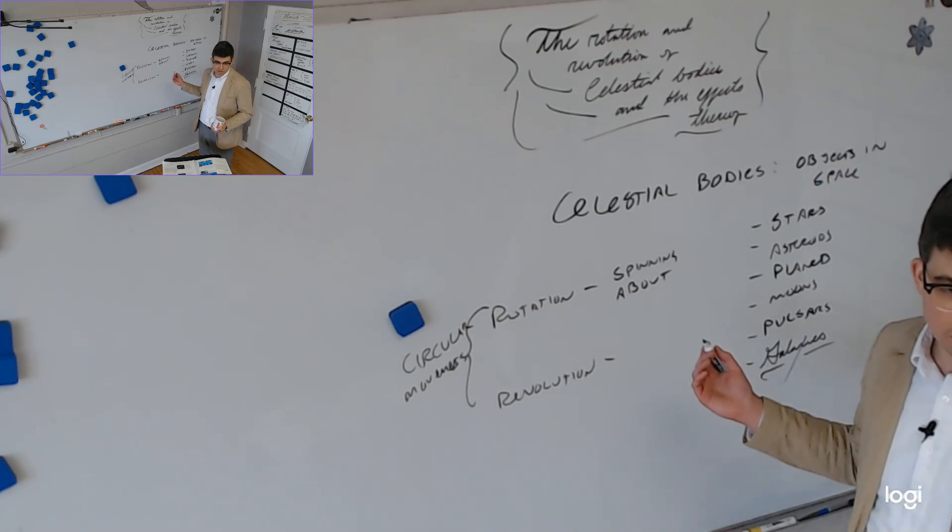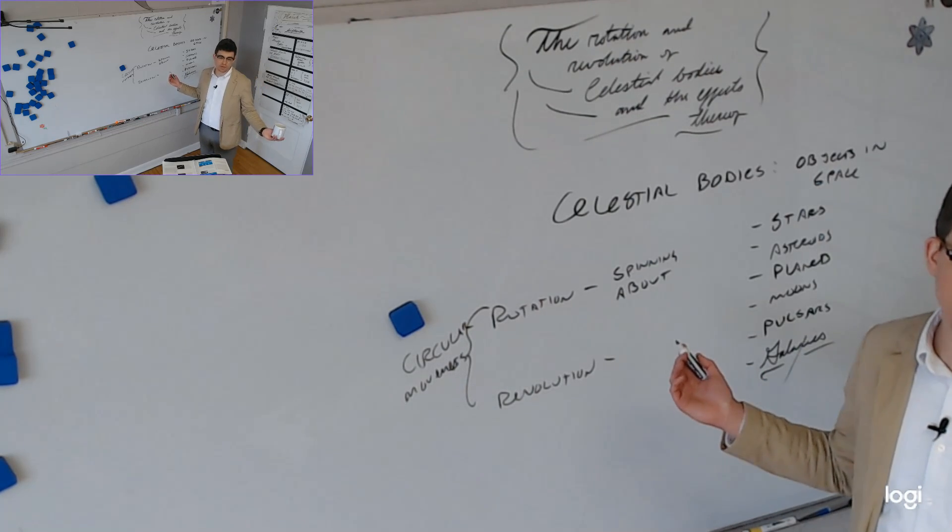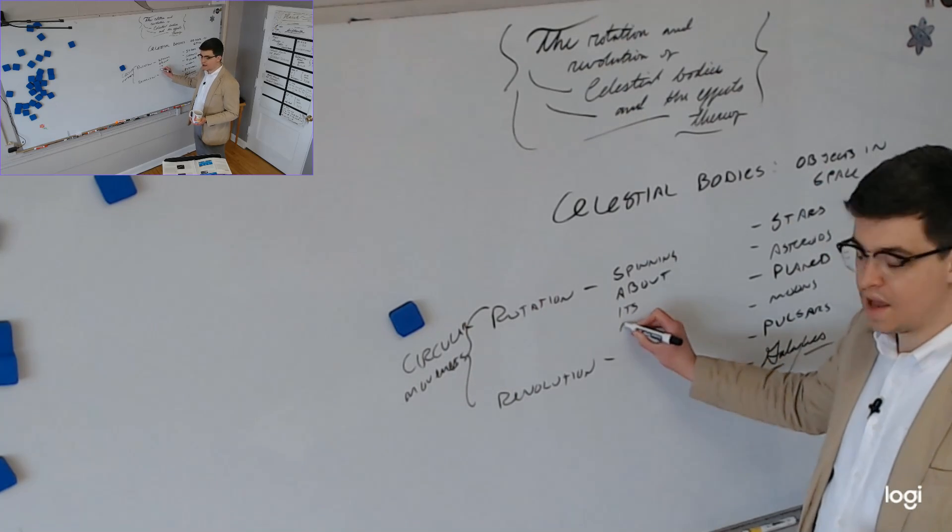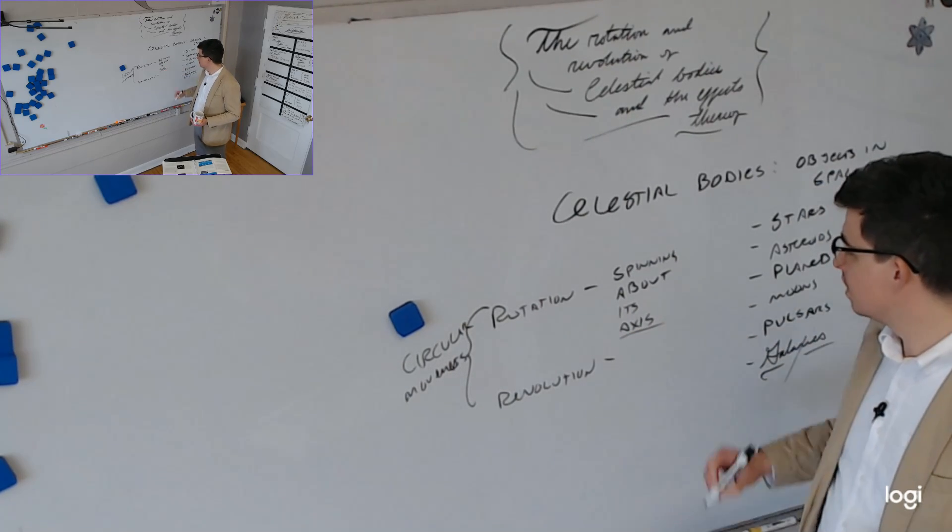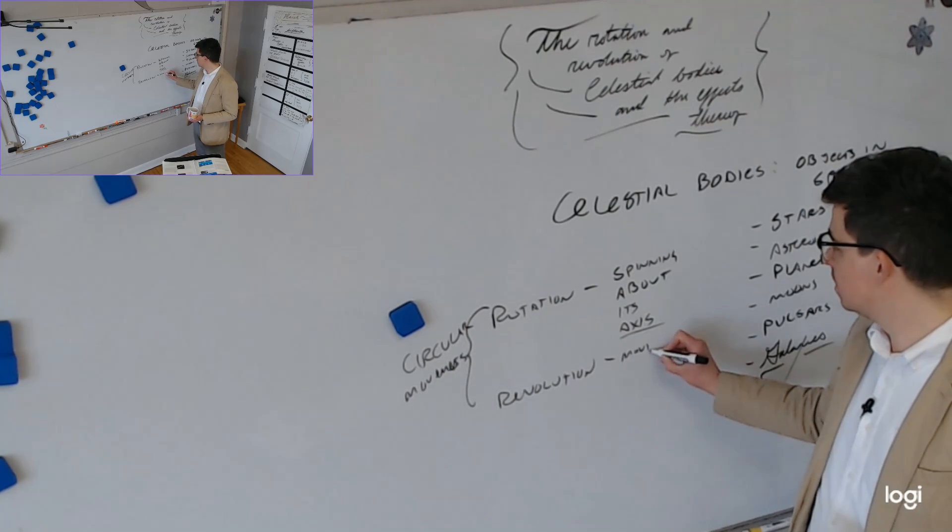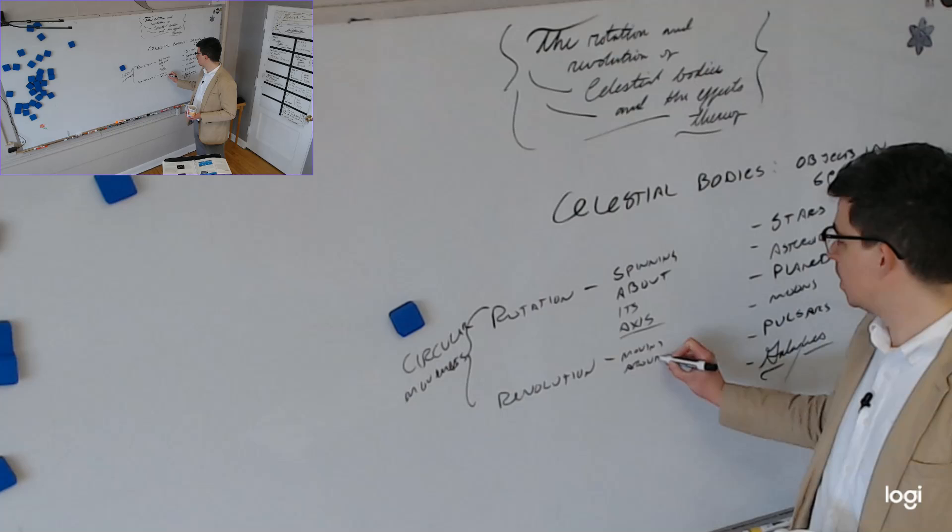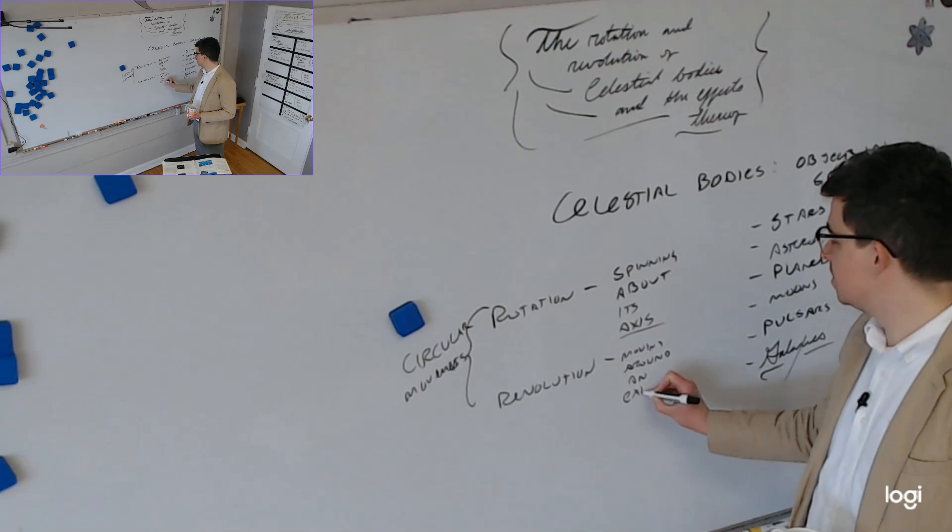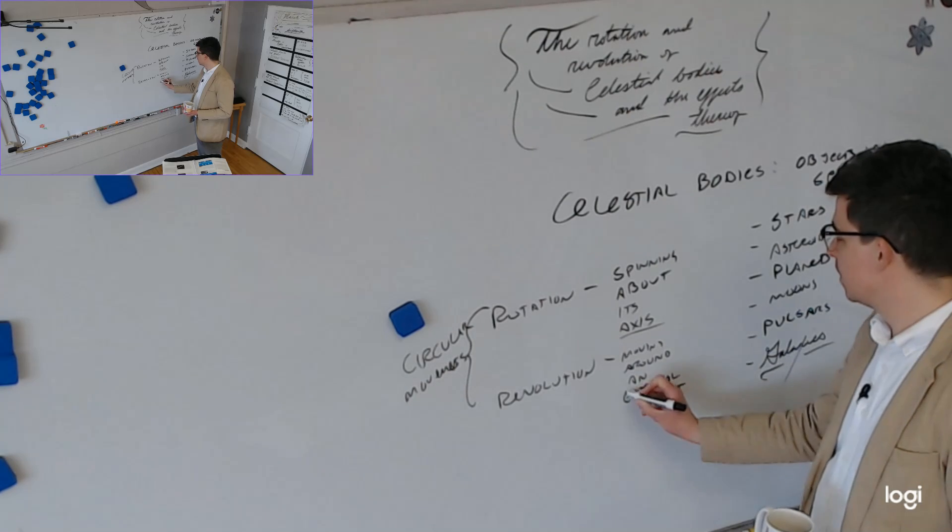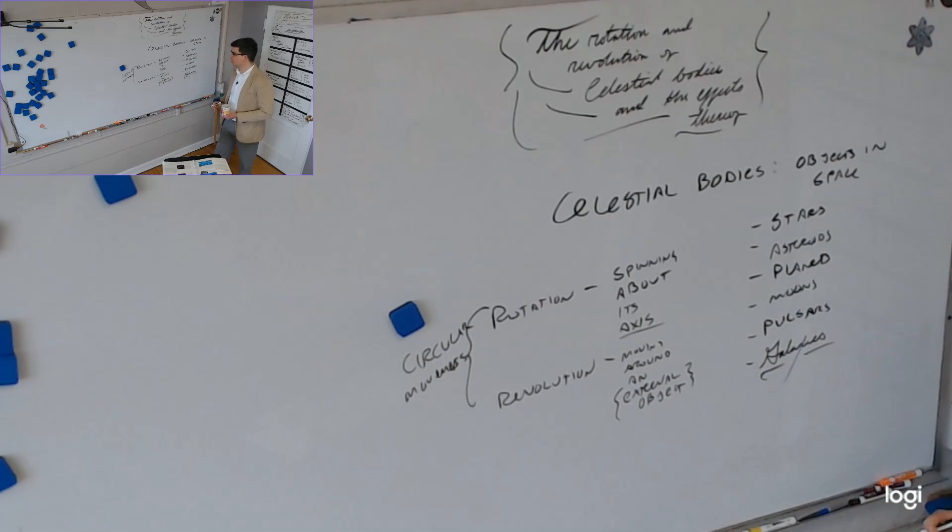Yeah, himself. His... what would we say? Some of us will say axle, but that would be slightly incorrect. Rotating about its axis. Revolution is moving around an external object. So he did both? Yeah, he did both.